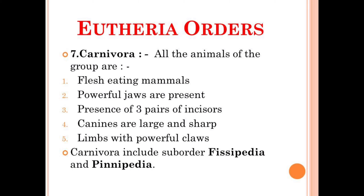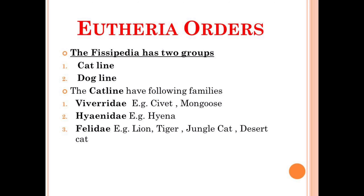The order Carnivora is subdivided into different sub-orders, that is Fissipedia and Pinnipedia. Now the sub-order Fissipedia is subdivided into two different groups: one is the cat line and another one is the dog line.